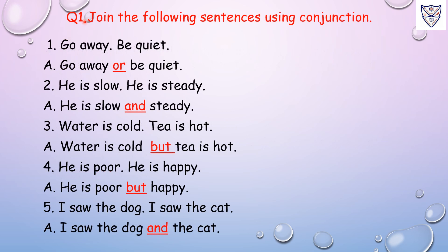Question number 1: Join the following sentences using conjunction. Number 1: Go away. Be quiet. We have to join two sentences with a conjunction. Answer: Go away or be quiet. Here 'or' is a conjunction.